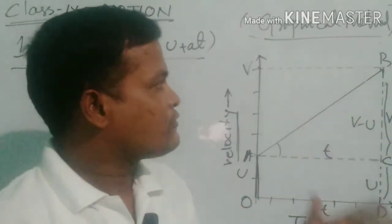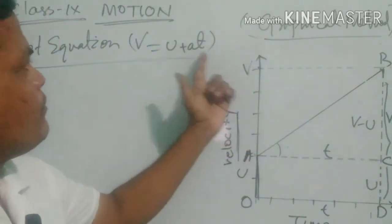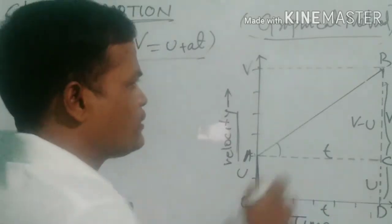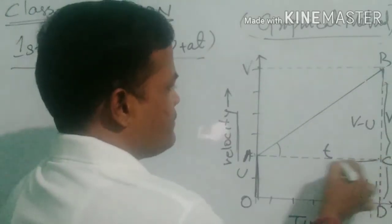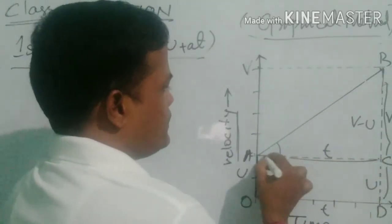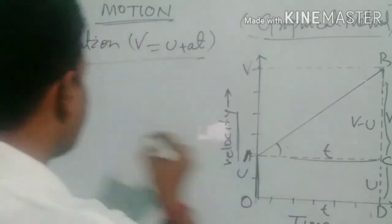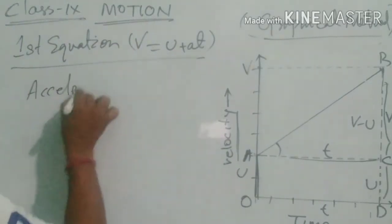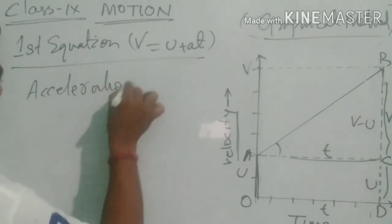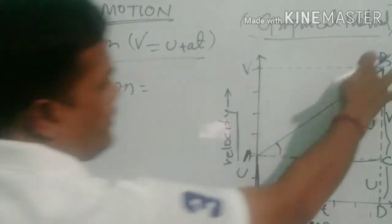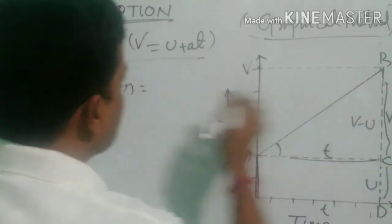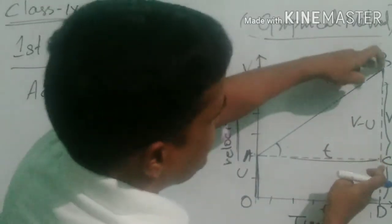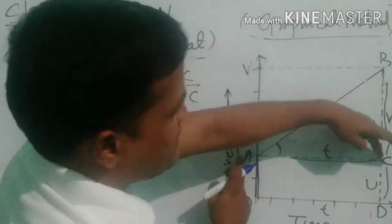We need to find the first equation, v = u + at. As I have told earlier, we have to find the slope of this figure. So we are going to calculate acceleration. Acceleration is equal to BC divided by AC.